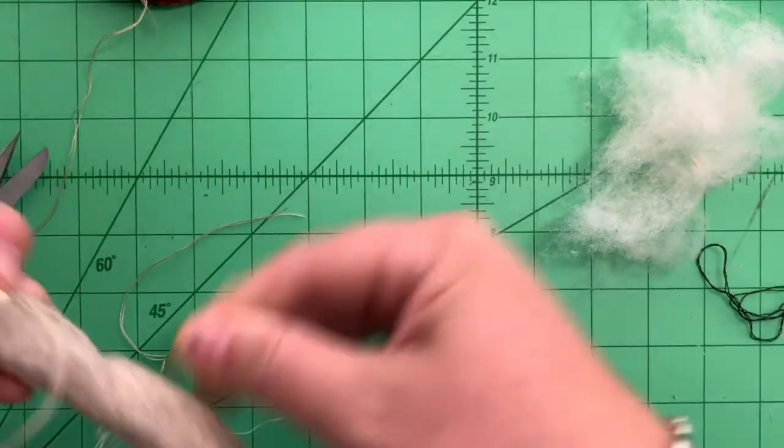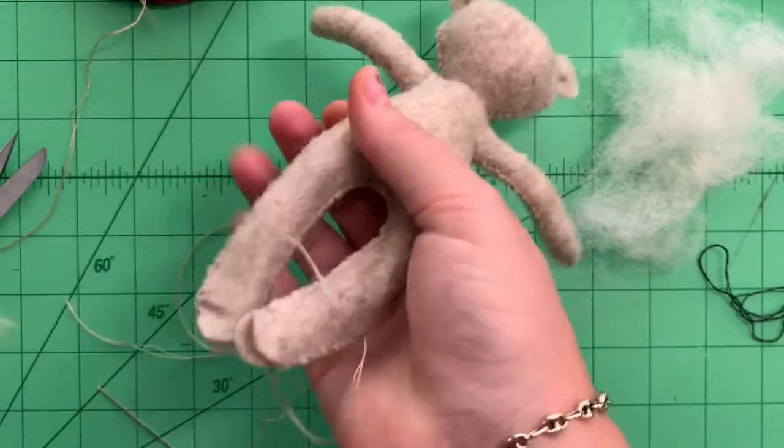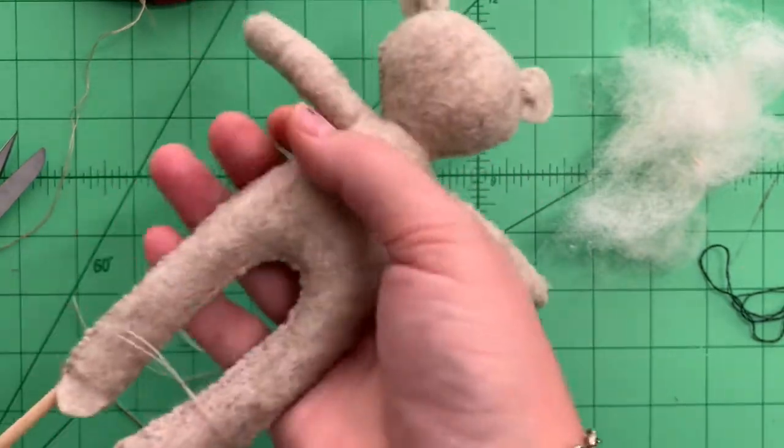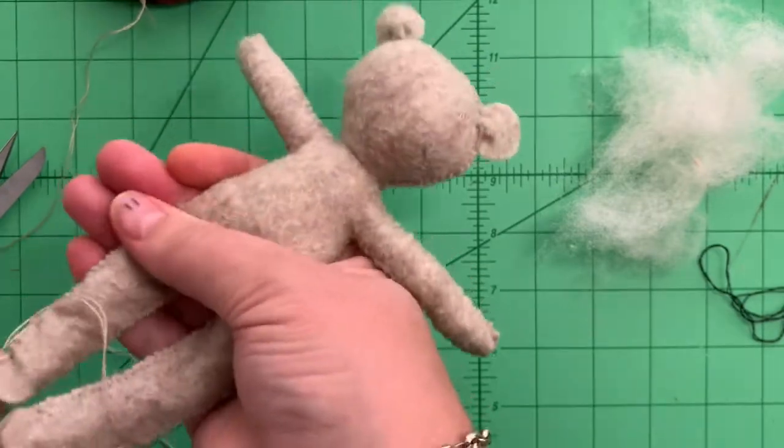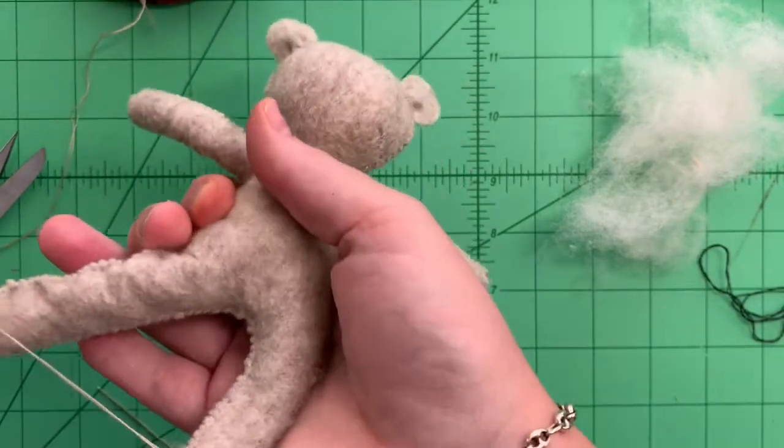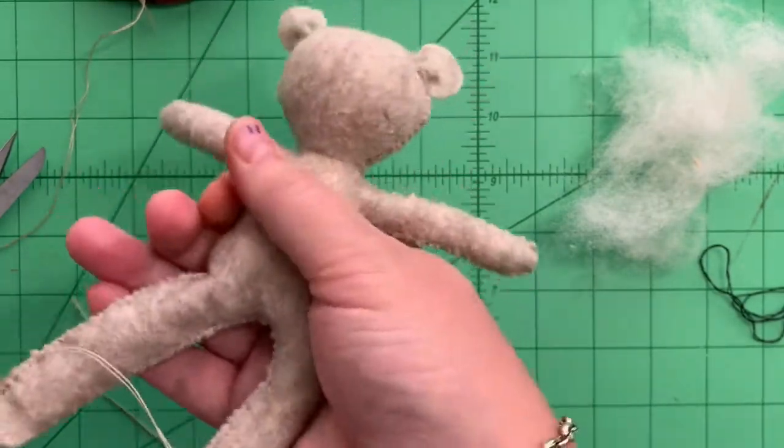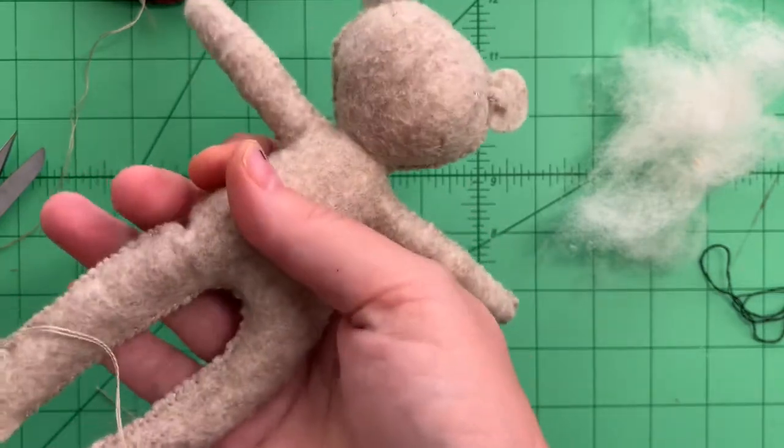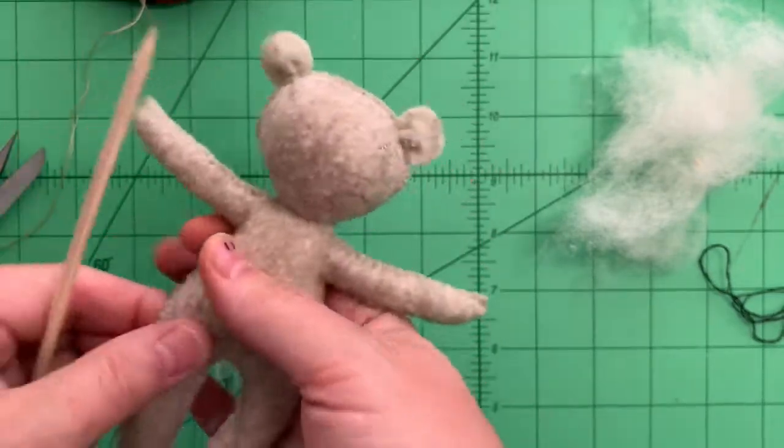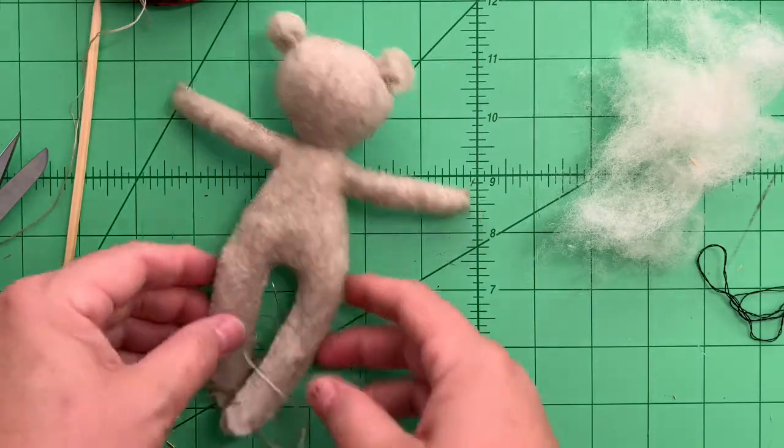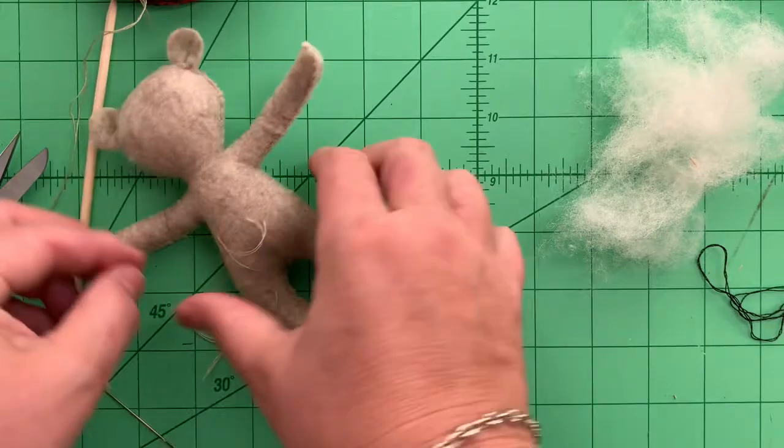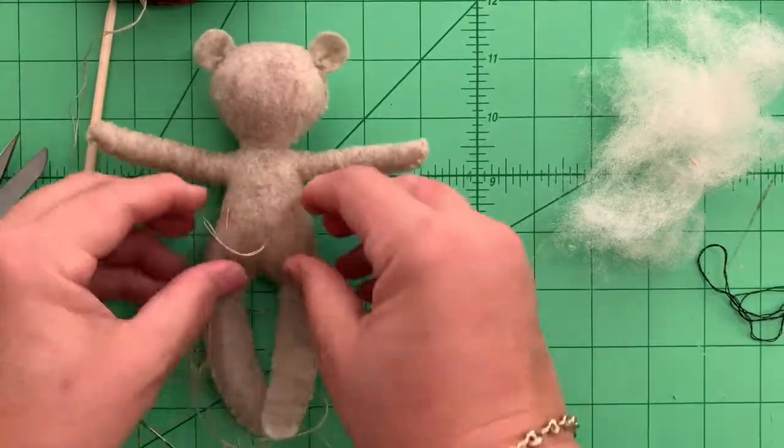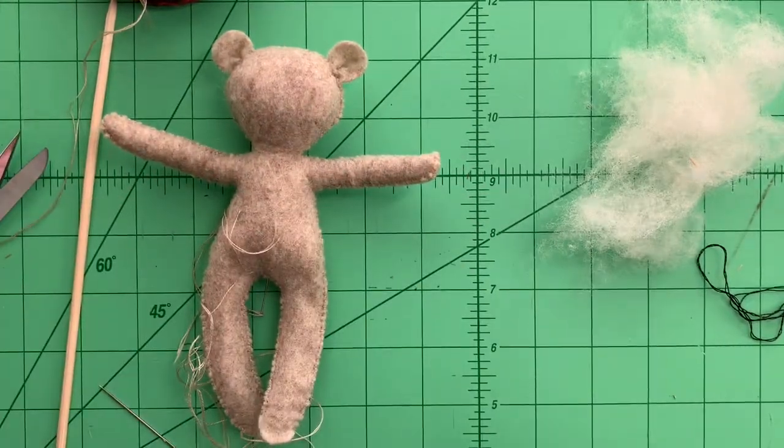There we go. I'm going to turn the skewer around and try to maneuver that bit of roving into his bum area. I'm going to fiddle with this a bit more. That's pretty good, he looks pretty good. Nice and solid, cute little belly. I'll play with him a bit more and I'll be back and we'll finish up his legs.